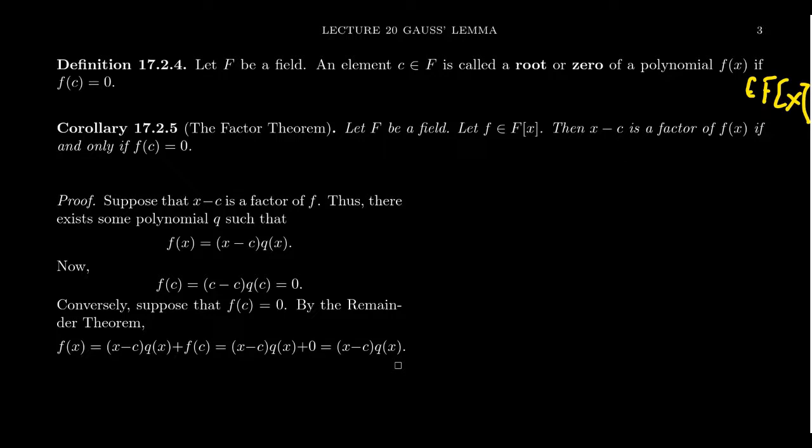The main result from this video of Lecture 20 that I want to present here is the so-called Factor Theorem, which tells us that there's a correspondence, a one-to-one correspondence, between the factors of a polynomial and the roots of the polynomial. So let F be an arbitrary field and let little f be a polynomial whose coefficients come from this field. Then the polynomial x minus c is a factor of f(x) if and only if f(c) equals zero.